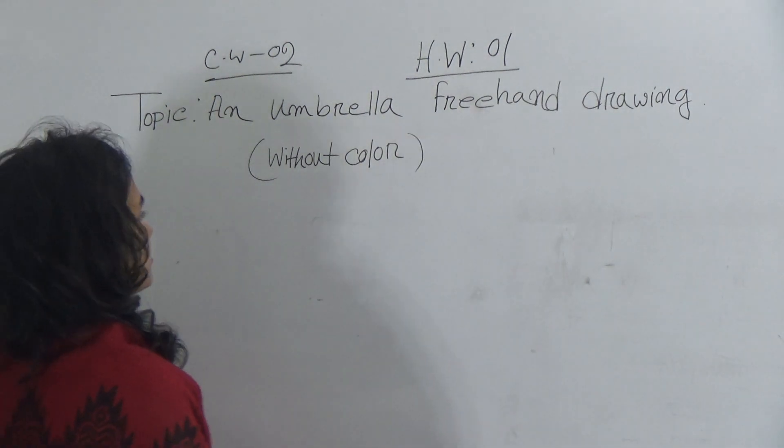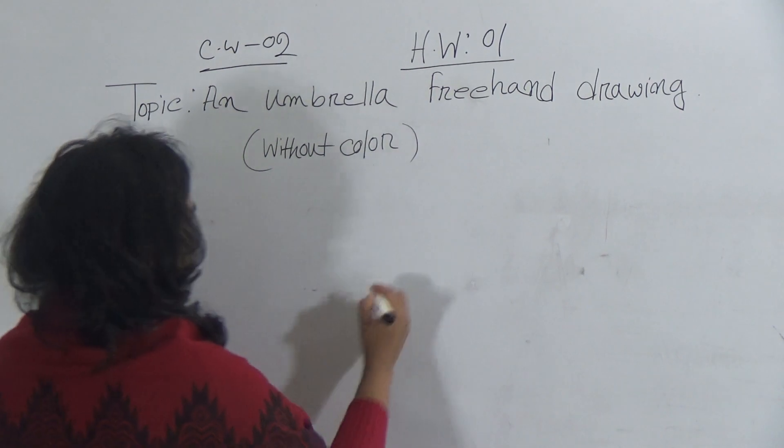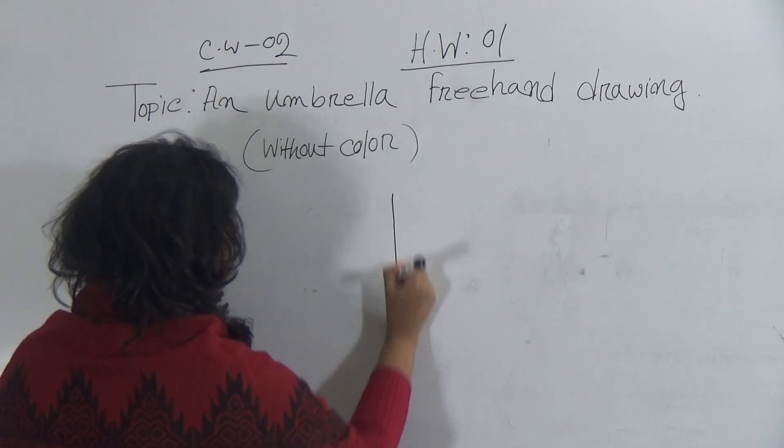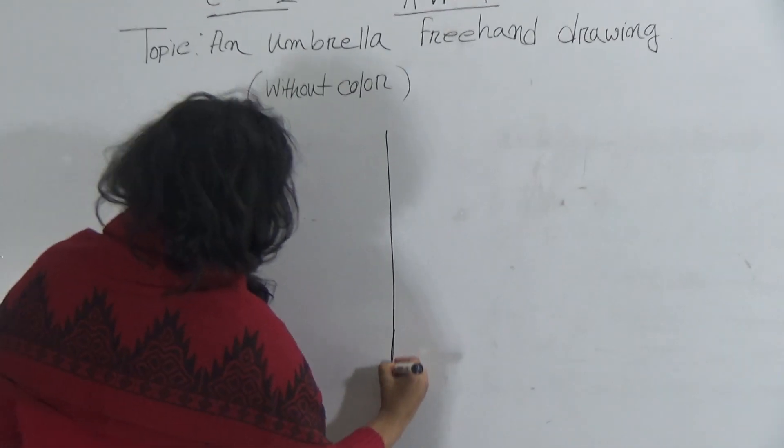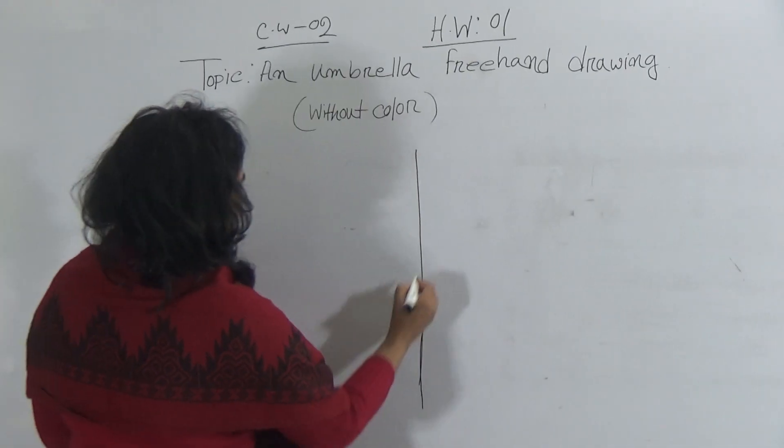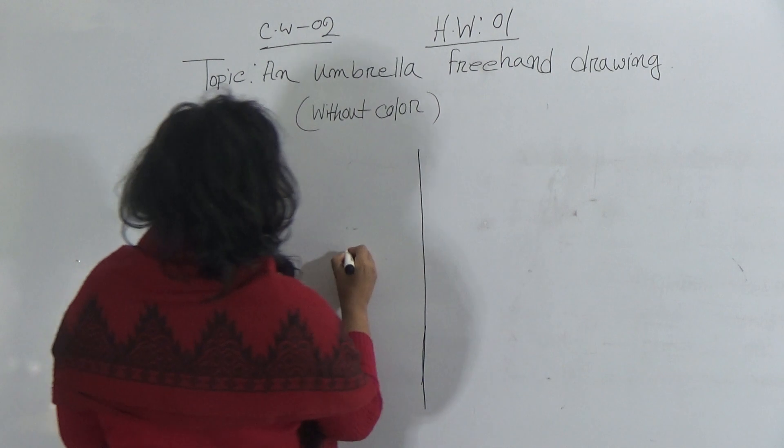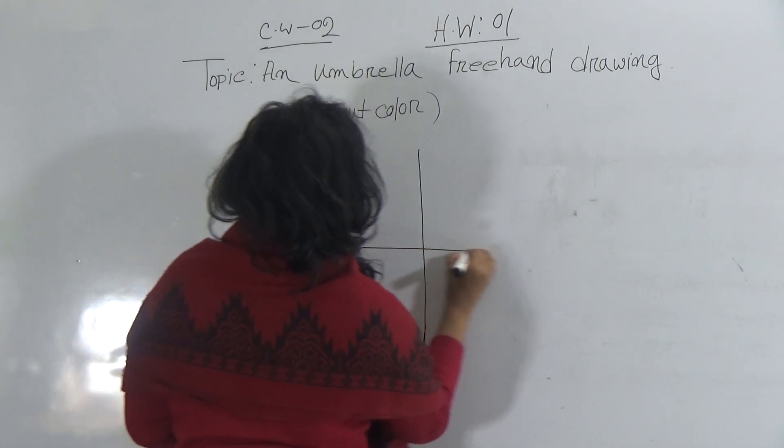It's very easy. First, you will draw just a straight line. Okay. Give a straight line. Then there you use another straight line. The middle point.